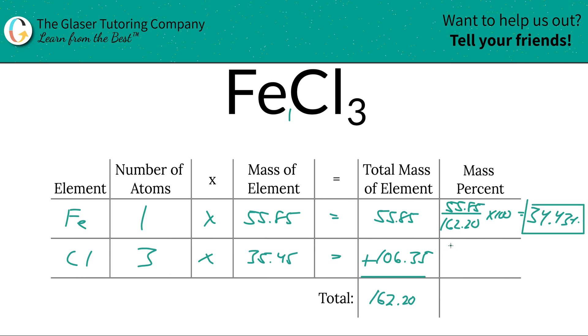And the same process then for chlorine. Total mass of chlorine there is 106.35 units of mass. It doesn't really matter what units you use, gram per mole or AMU. They're both going to cancel. So just leave the units out. Save yourself a little space and a little energy. And the percent here then will work out to be 65.57 or so percent.